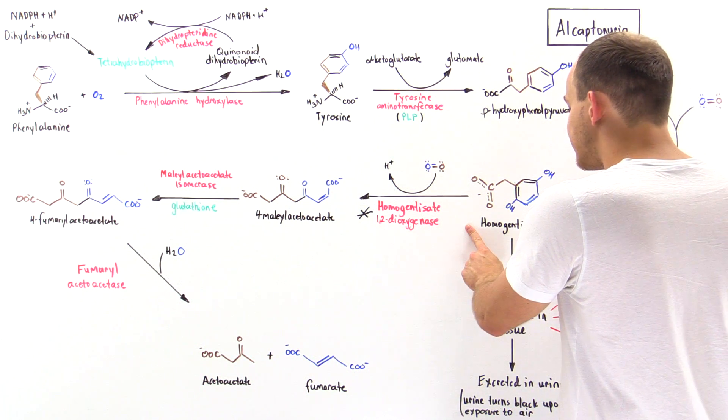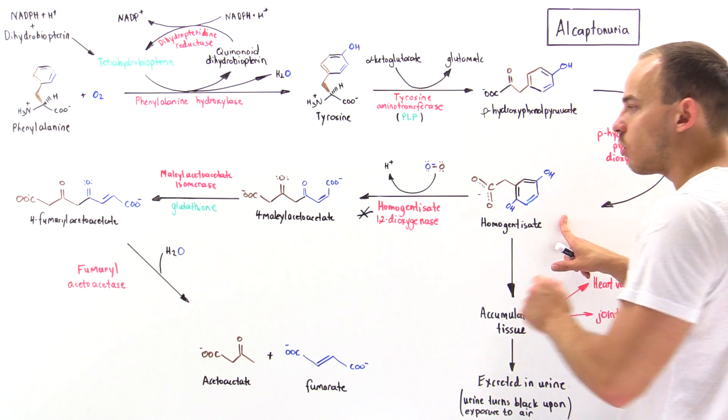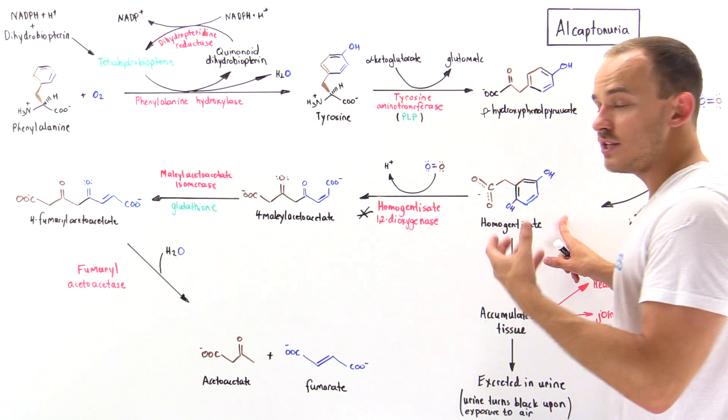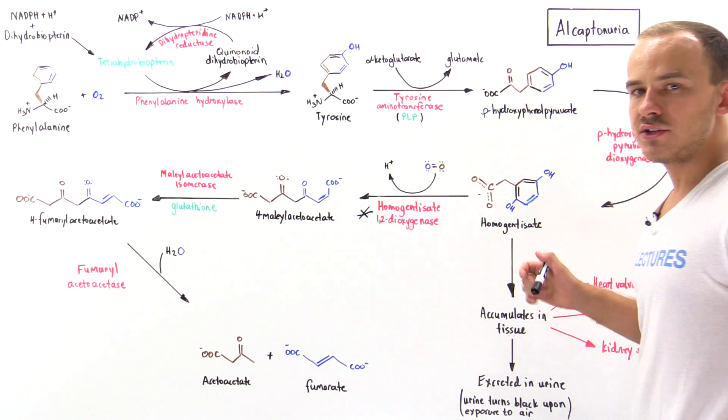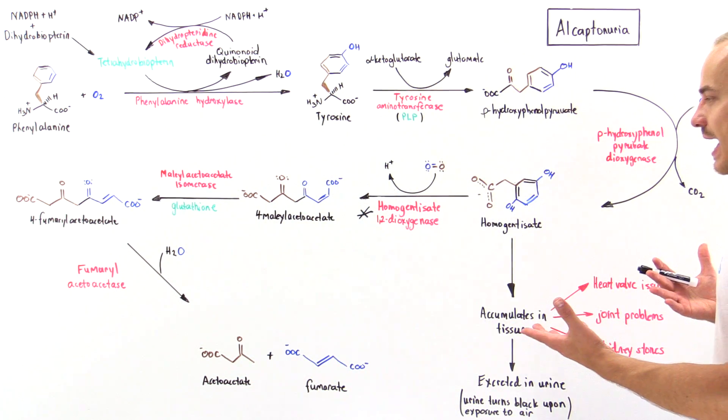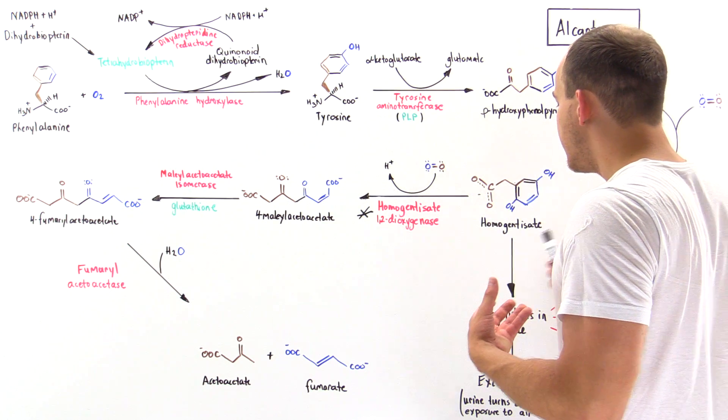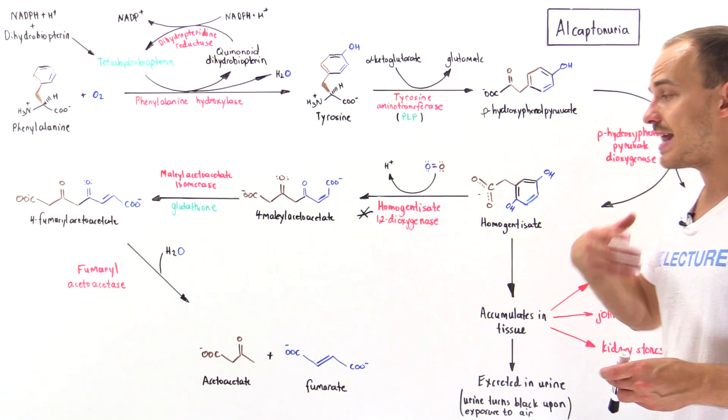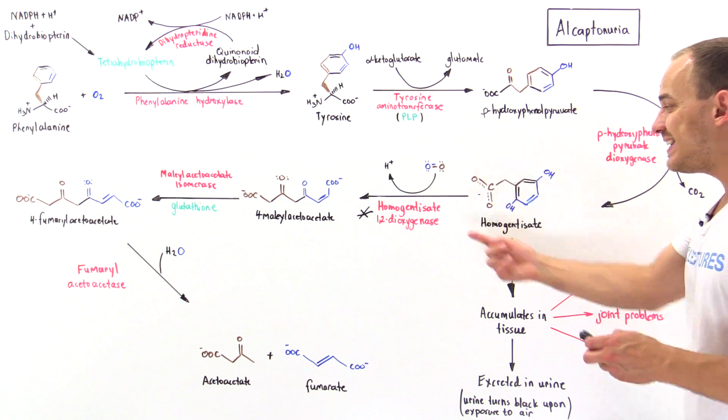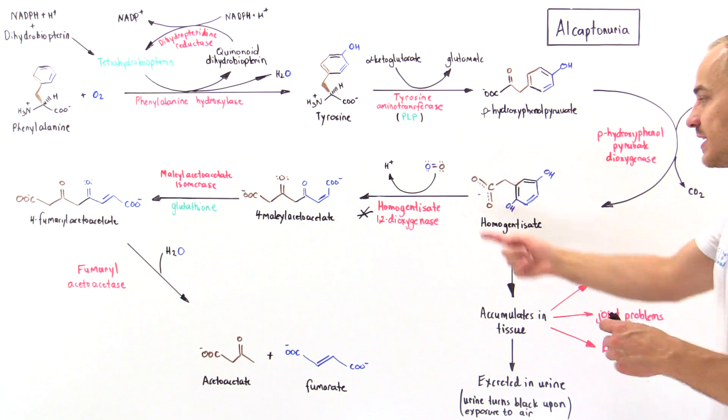So the homogentisate cannot be transformed into 4-maleylacetoacetate and will ultimately not be transformed into these two molecules. Because of that, homogentisate will accumulate in our cells, in our tissues, in our blood. Ultimately, the kidneys will be able to excrete this via the urine.